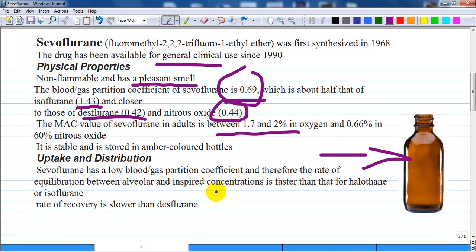Uptake and distribution: sevoflurane has a low blood gas partition coefficient and therefore the rate of equilibration between the alveolar and inspired concentration is faster than that for halothane or isoflurane. Because of its higher partition coefficient in vessel rich tissues like muscle and fat, the rate of recovery is slower than desflurane.